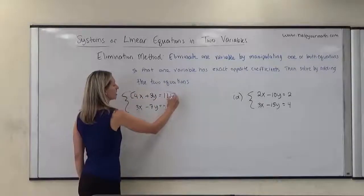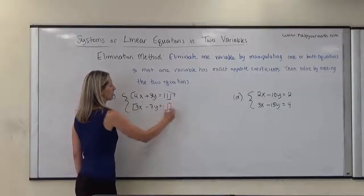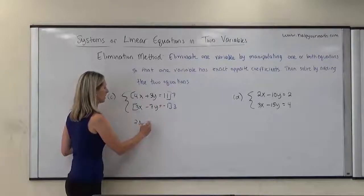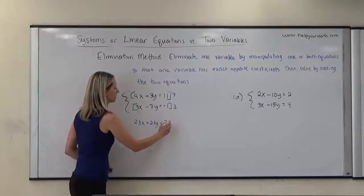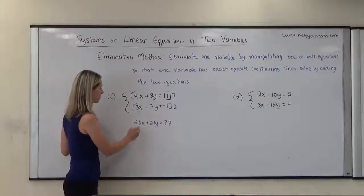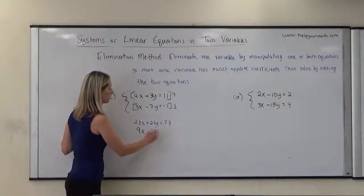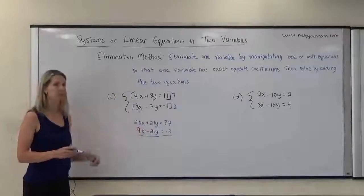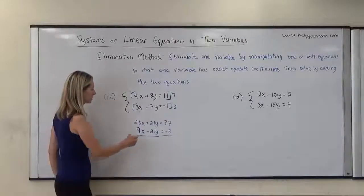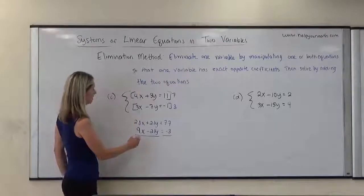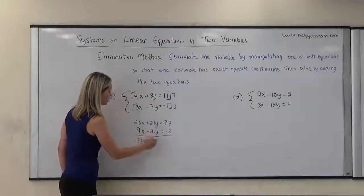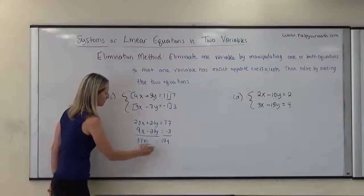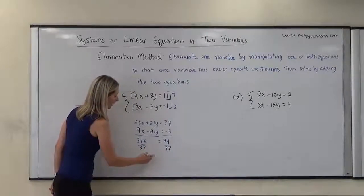I'm going to multiply the top equation by 7 and the bottom equation by 3. Multiplying the top equation by 7 gives me 28x plus 21y is equal to 77. Multiplying the bottom equation by 3 gives me 9x minus 21y is equal to negative 3. Now that I have exact opposite coefficients, the y variable will cancel out. 28x plus 9x gives me 37x, and 77 minus 3 is 74. Dividing both sides by 37, I get x is equal to 2.